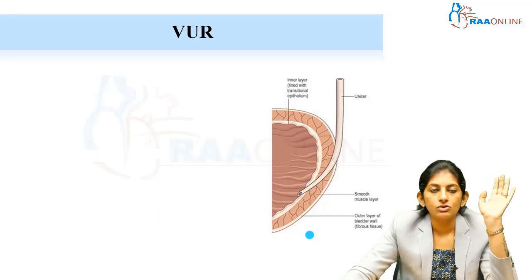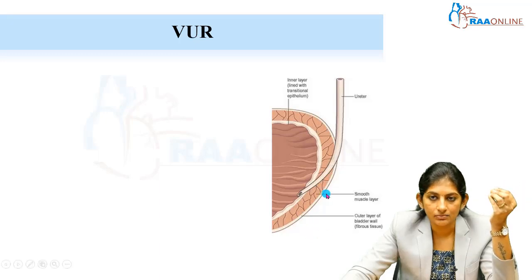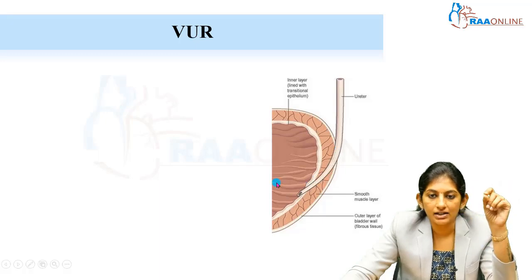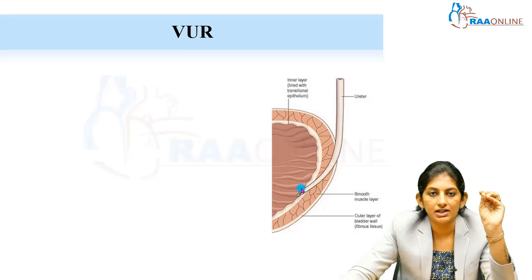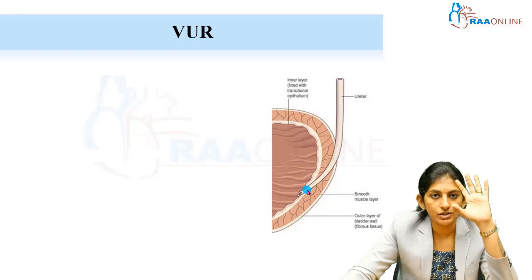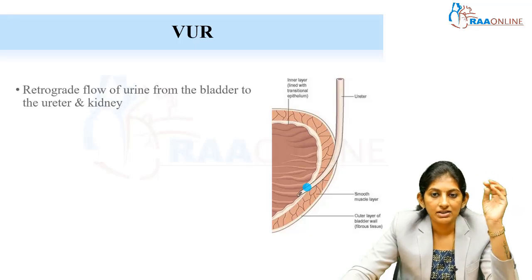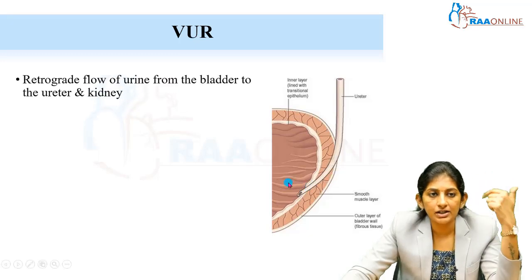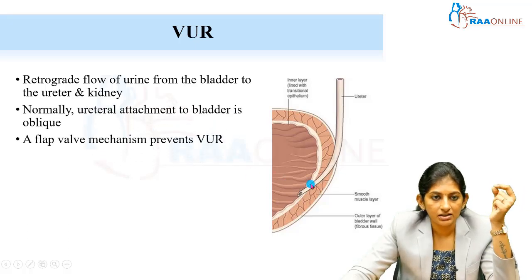Normally, VUR should not be present. Physiologically, VUR is absent because of the angle at which the ureter enters the bladder — it enters in an oblique angle, goes intramurally, and sits snugly inside the smooth muscle layer. Because of this oblique insertion, there is normally no retrograde flow. This is a one-way flap mechanism that prevents retrograde flow.